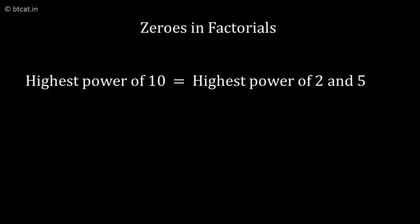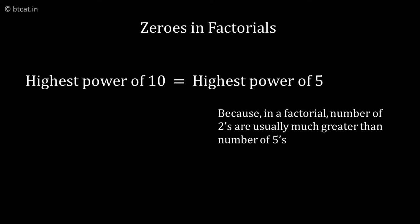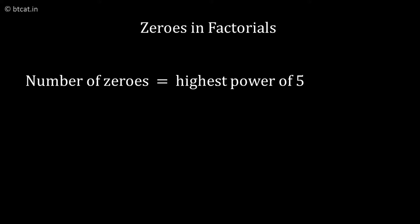Which is the same as the highest power of 5, because the number of 2s in 100 factorial will be far, far higher than the total number of 5s which will divide it. In other words, whenever we want to find zeros in any factorial, we are essentially finding the highest power of 5 in that number.